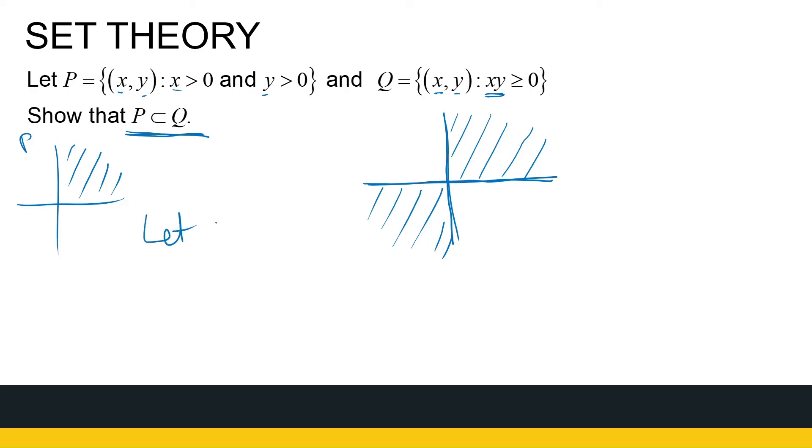So, algebraically, how are we going to show that? Well, I'm going to say, let x, y be an element of P, because I need to show that everything in P is also in Q. Then, I know that x is greater than 0 and y is greater than 0. So, I can conclude that x times y must be greater than 0. So, to be in Q, x times y must be greater than or equal to 0. So, therefore, that x, y is an element of Q. So, I can conclude that P is a subset of Q. So, that's a start. I've got the first part.